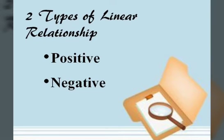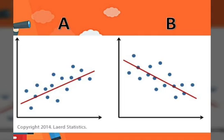What do you think is the difference between the two? Given the two graphs shown in this video, which do you think has a positive linear relationship and which has a negative linear relationship? Is A positive and B negative, or is A negative and B positive?